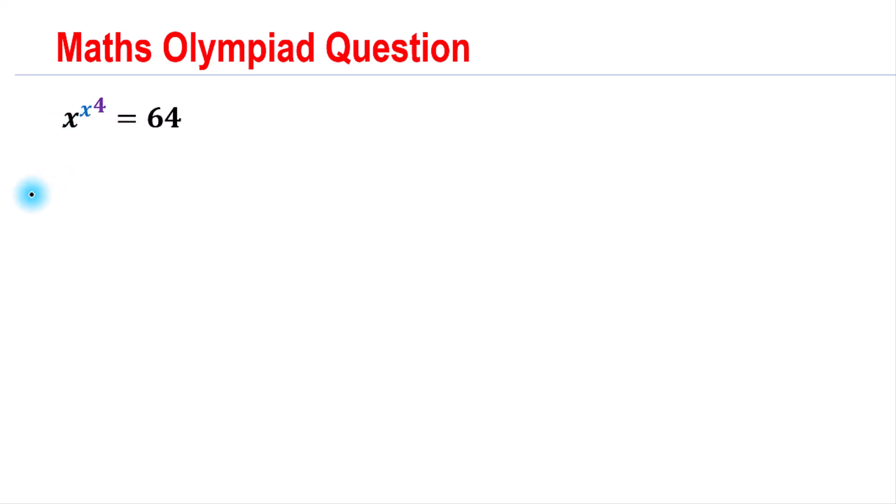So we can write: this implies x to the x to the 4, raised to the 4, equals 64 to the 4. Since 64 equals 8 squared, this can be written as 8 to the 8.